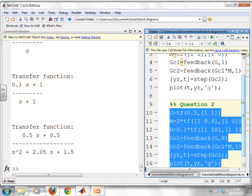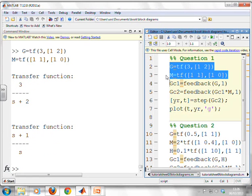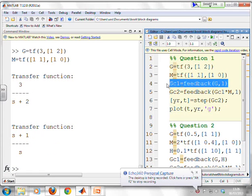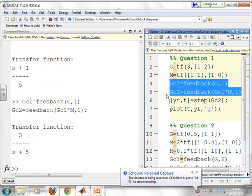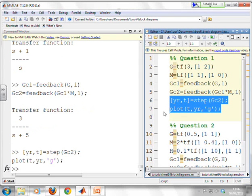So if I go up here to the top, you'll see there's my G and M. Let's enter those. G 3 over S plus 2. M S plus 1 over S. And then you'll see I use these two feedback statements, one after another. Feedback G comma 1 gives me G over one plus G. And then feedback, this GC1 times M comma 1 gives me the second one. And obviously, I can do plots and everything else as normal on this new diagram. I'm not going to show that. It's not important.